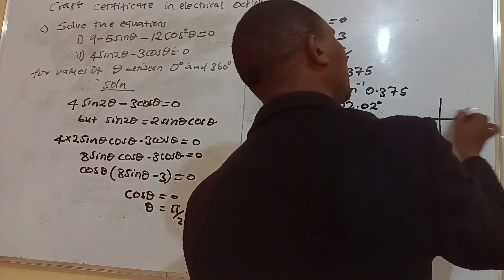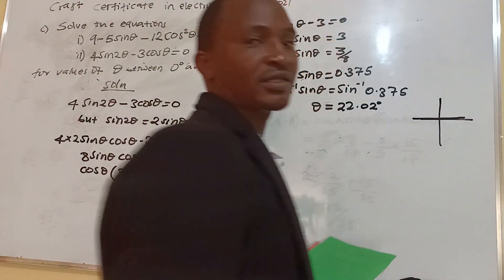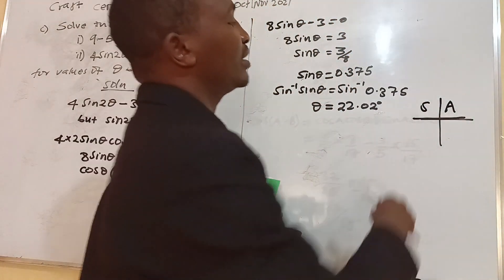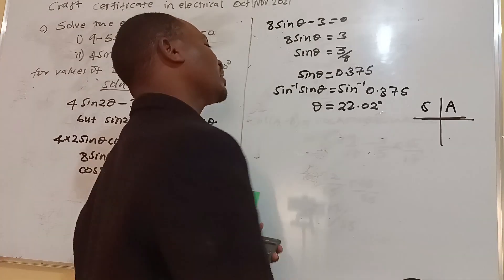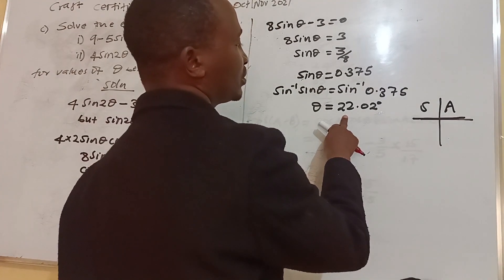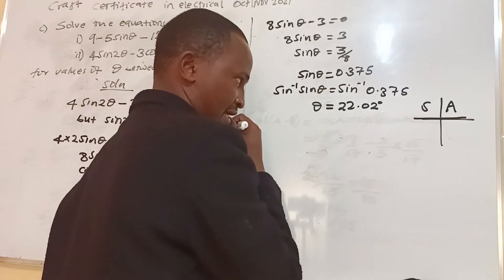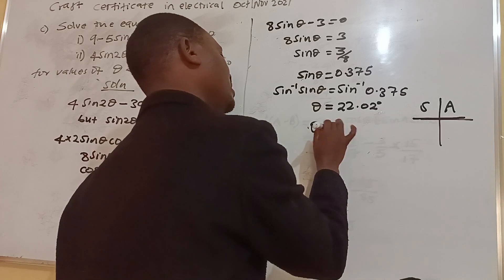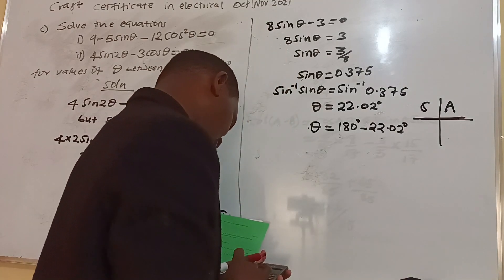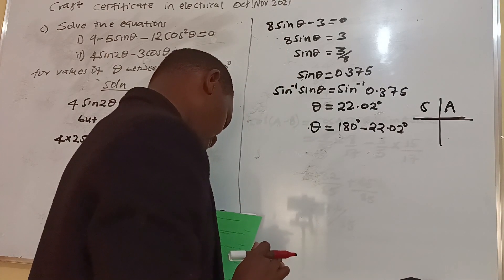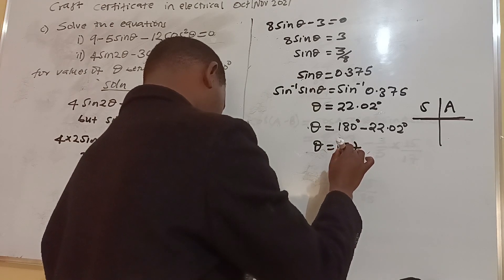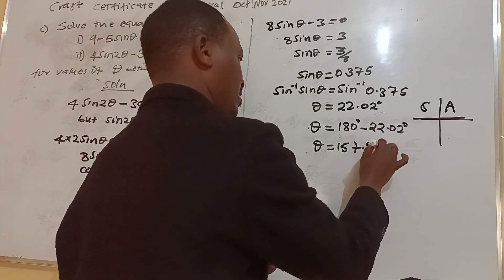Since sine is positive in both the first and second quadrants, we need angles in both quadrants. The angle in the first quadrant is 22.02 degrees. The angle in the second quadrant is 180 minus 22.02 degrees, which equals 157.98 degrees.